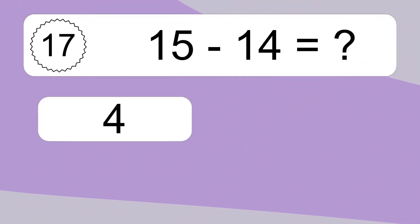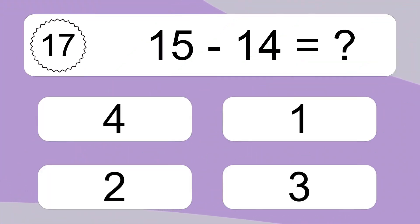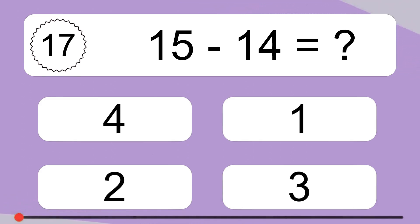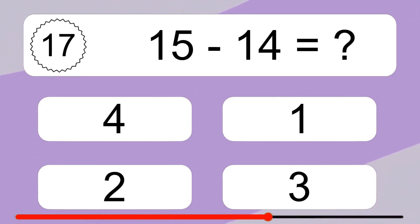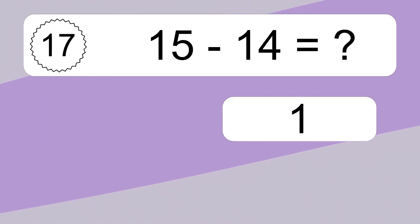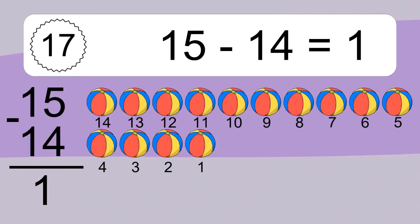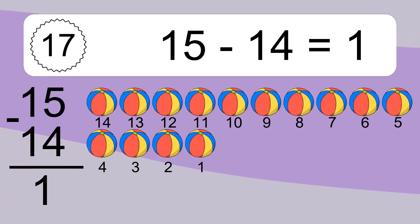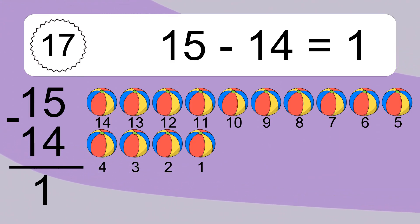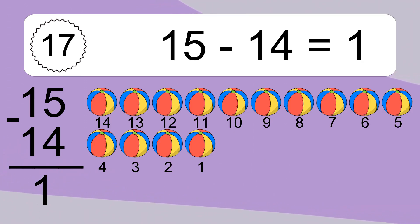15 minus 14 equals what? 15 minus 14 equals 1. Let's count it: 14, 13, 12, 11, 10, 9, 8, 7, 6, 5, 4, 3, 2, 1.